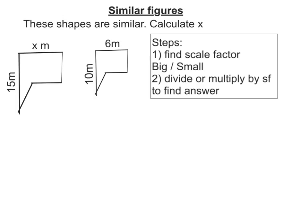Let's look at this second example. The first thing I need to do is find two corresponding sides. So 15 metres corresponds to 10 metres here. So my scale factor is going to be 15 divided by 10, which is 1.5.